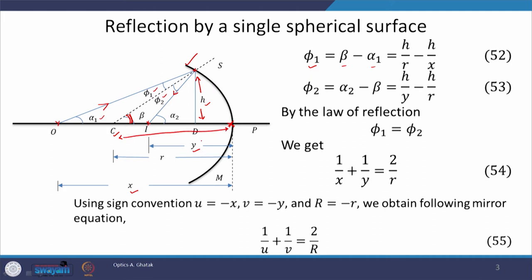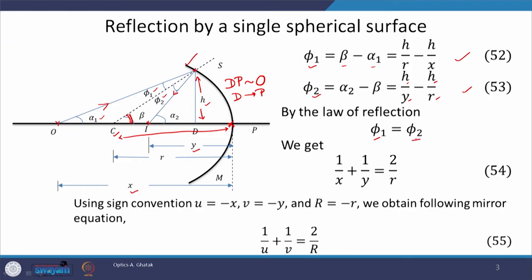Since we are in the paraxial region, the distance dp is approximately equal to 0, meaning d approaches p very closely, so this distance dp can be neglected. Therefore, these relations hold: φ1 equals h/r minus h/x, and for φ2, we write h/y minus h/r. Now, the law of reflection says that angle of incidence equals angle of reflection. Therefore φ1 must equal φ2, and substituting these expressions we get 1/x plus 1/y equals 2/r, which is what we get for a spherical reflecting surface.